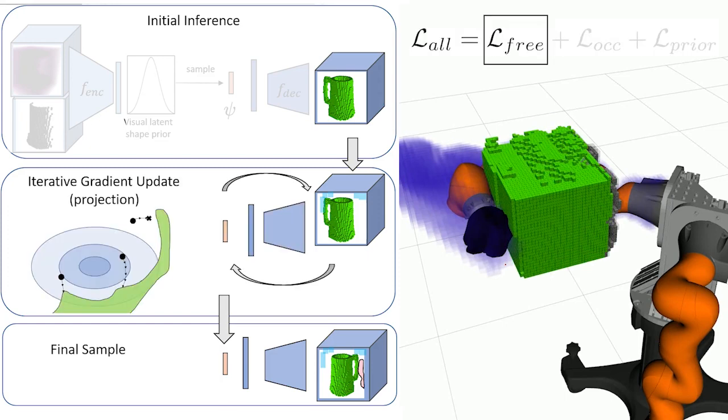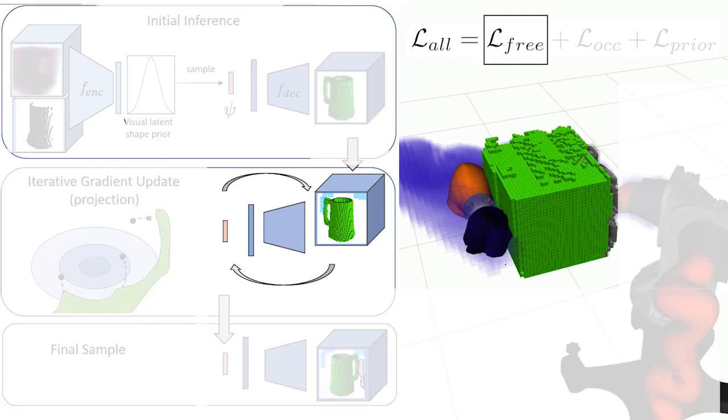Consider the first term of our loss function, which penalizes overlap between known free space and the completed shape. We backpropagate the gradient of this loss to iteratively update the latent shape vector, repeating until the shape is feasible.